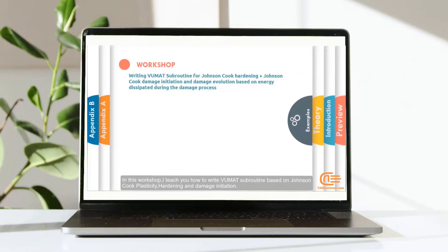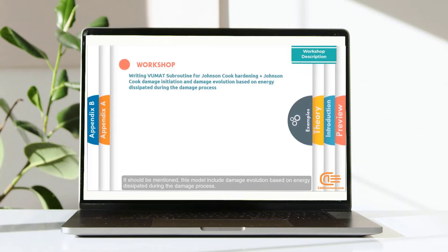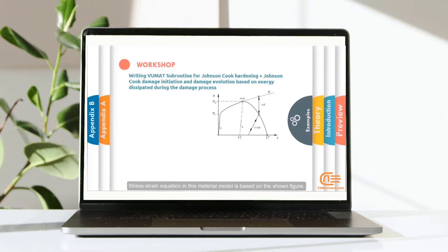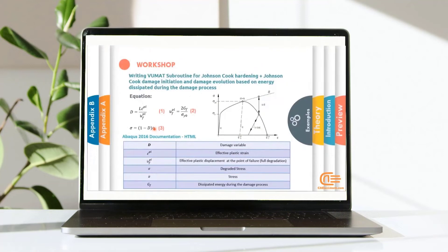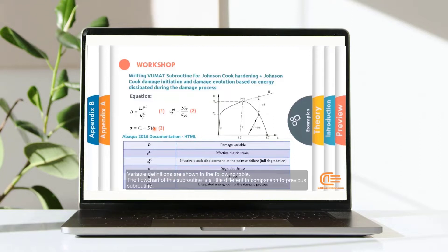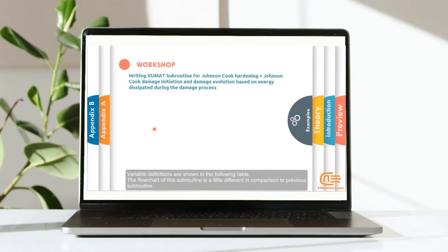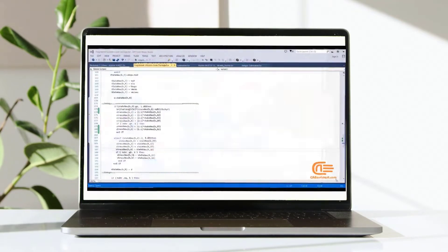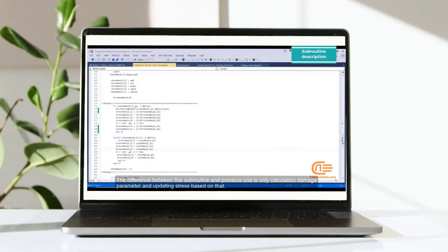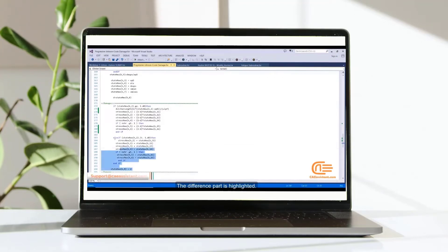In this workshop, I teach you how to write VUMAT subroutine based on Johnson & Cook plasticity, hardening and damage initiation. It should be mentioned, this model includes damage evolution based on energy dissipated during the damage process. Stress-strain equation in this material model is based on the shown figure. Variable definitions are shown in the following table. The flowchart of this subroutine is a little different in comparison to previous subroutine. The difference between this subroutine and previous one is only calculation damage parameter and updating stress based on that. The difference part is highlighted.